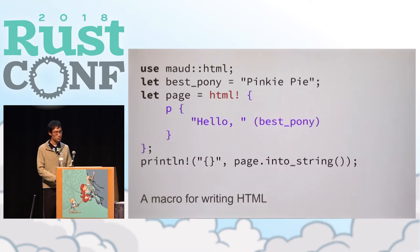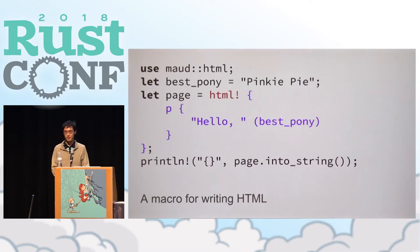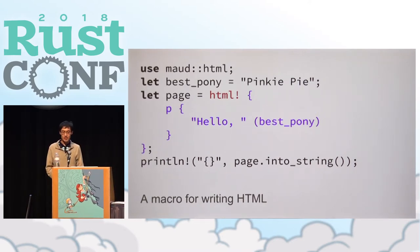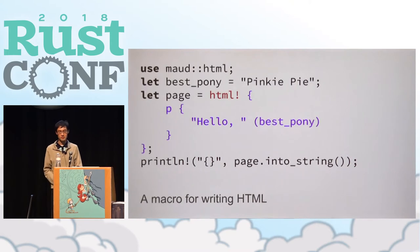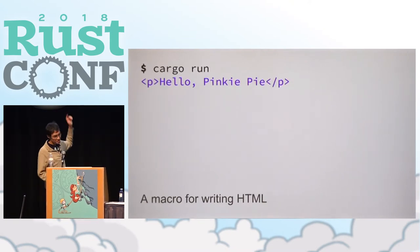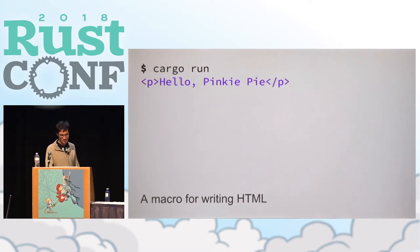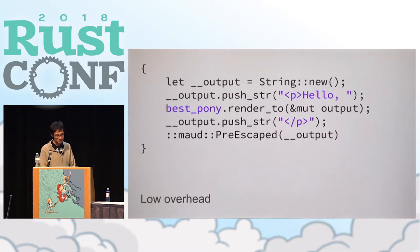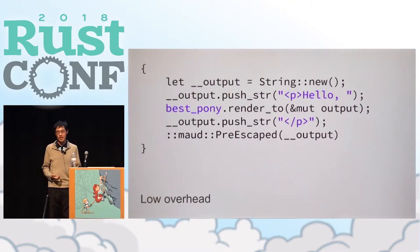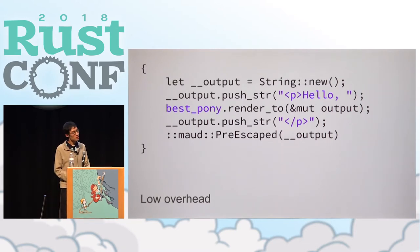The Rust compiler itself doesn't know what this particular syntax means, but what Maud does is take this piece of syntax and convert it into normal Rust code that the rest of the compiler will understand. The output is the string "hello pinky" wrapped in paragraph tags.